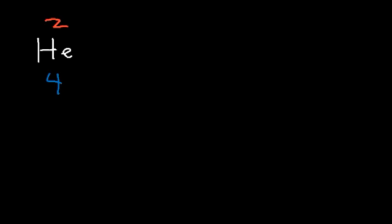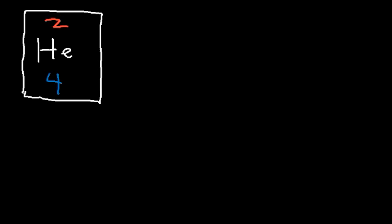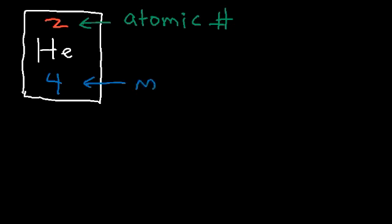Consider the symbol for helium. On the periodic table you'll see a number on top and a number on the bottom. The smaller of these two numbers represents the atomic number, and the larger of these two numbers is the average atomic mass, which you can also use as the mass number.